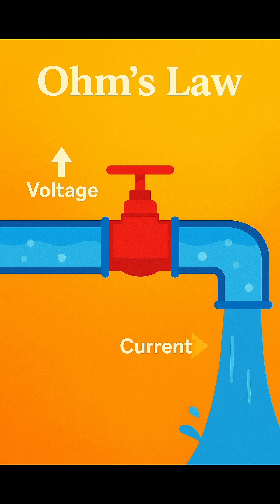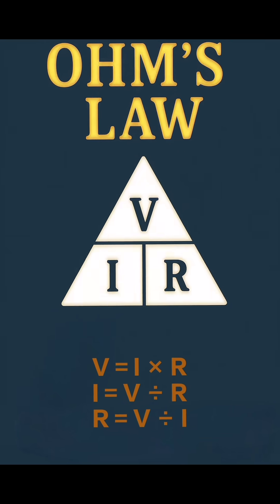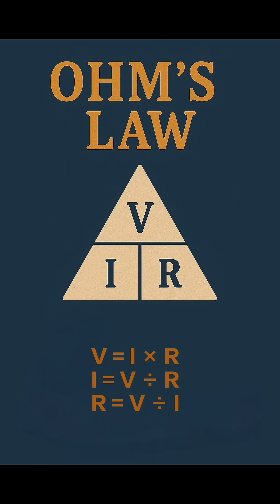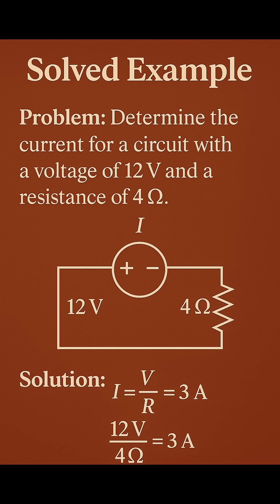Think of electricity like water: voltage is pressure, resistance is the tap, and current is the water flow. Use the Ohm's Law triangle to remember all three formulas easily. If you have 12 volts and 4 ohms, divide them — you get 3 amps of current.